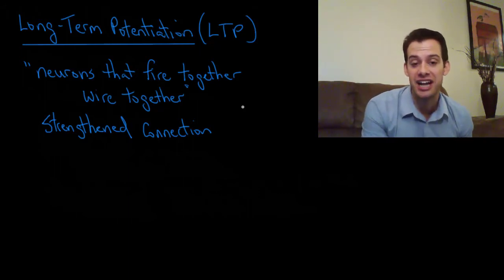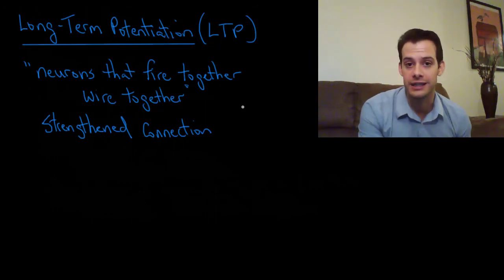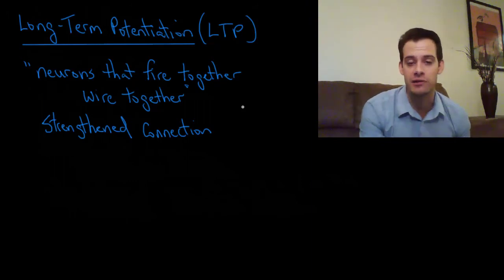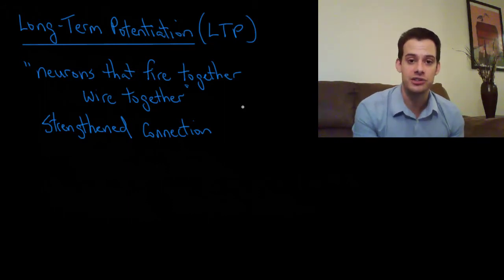So the first neuron can change the level of neurotransmitter that it's releasing. And the second neuron can actually change its receptors to make it more sensitive to that neurotransmitter. And so what happens is this makes it more likely that when the first neuron fires, the second neuron will also fire. So this is how we have this strengthened connection.